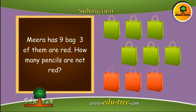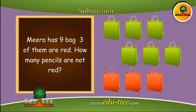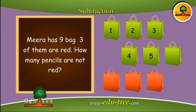Mira has nine bags. Three of them are red. How many bags are not red? Let us count the bags which are not red: one, two, three, four, five, and six. There are six bags which are not red.